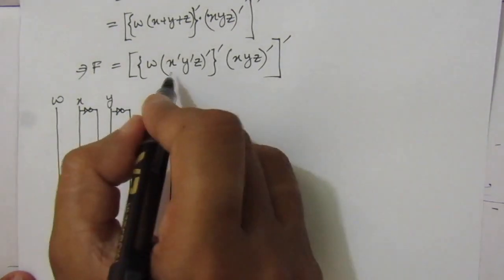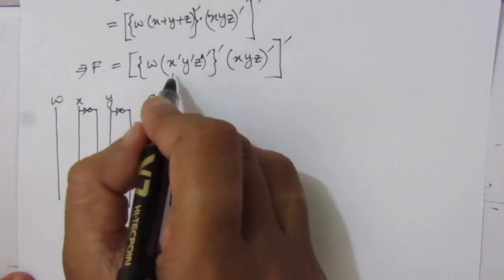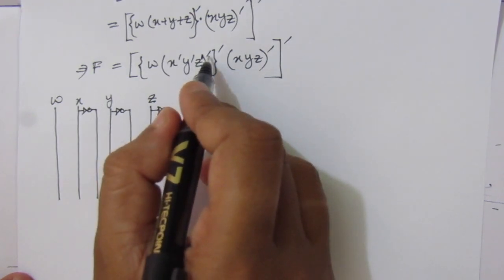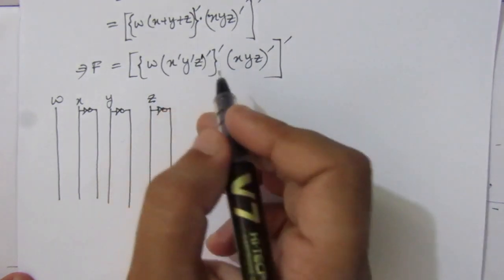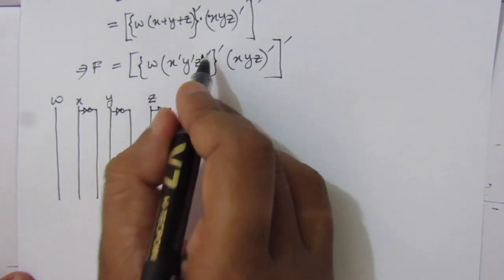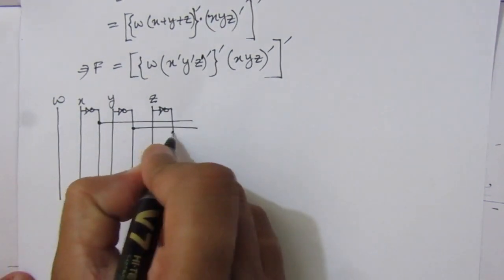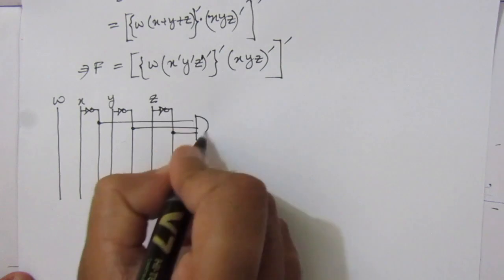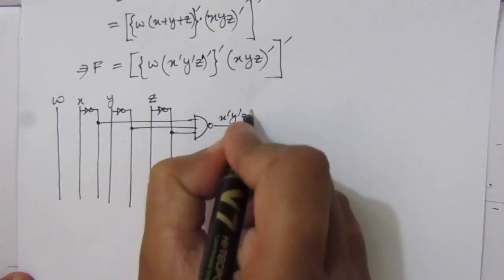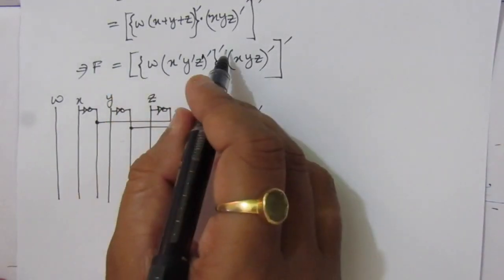First, we find this expression. From the expression we can see that x̄, ȳ, and z̄ are multiplied and then inverted. So we use a NAND gate with inputs x̄, ȳ, z̄ to implement this part of the expression. The output of this NAND gate gives us (x̄ · ȳ · z̄) whole bar. Now we have to multiply this with W and take the complement.